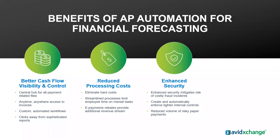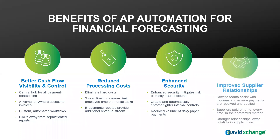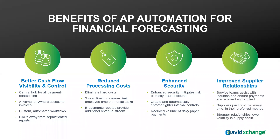Enhanced security mitigates the risk of costly fraud, creates automatically enforced tighter internal controls, and reduces the volume of risky paper payments. Everybody knows that by sending out a paper check, you're sending out all your banking information — it's still billions of dollars a year in check fraud. And AP automation improves supplier relationships: service teams assist with inquiries, ensure payments are received and applied, and suppliers get paid on time, every time, in their preferred method of payment — building a stronger relationship and lowering risk in the supply chain.